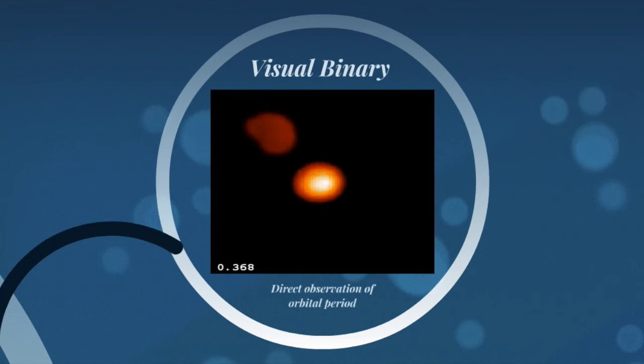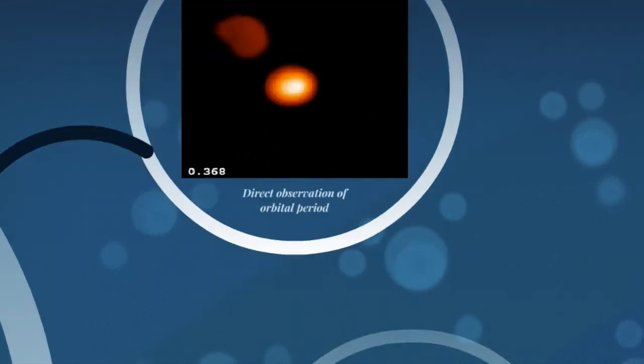This is an image of a visual binary. You see the large, bright star in the center and a smaller, dimmer star orbiting around it. We can, this way, directly measure the period of the rotation. And from that, we'll be able to find the mass.